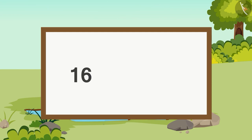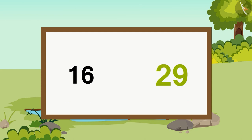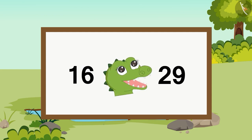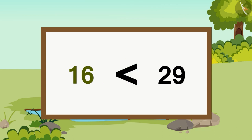Let's take the numbers 16 and 29. The number 29 comes after the number 16 while counting. The number that comes later while counting is the bigger number, so 29 is bigger than 16. Crocs' mouth will open towards the bigger number 29. But children, you can also see that this is showing a smaller symbol — we can also say that 16 is less than 29.